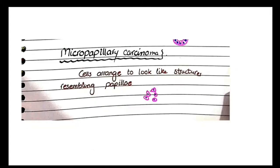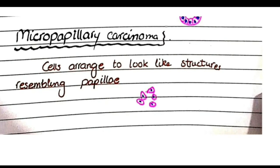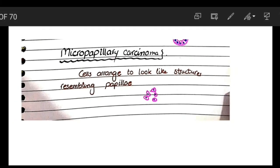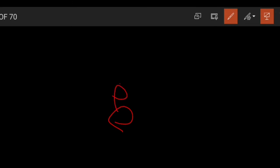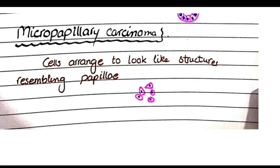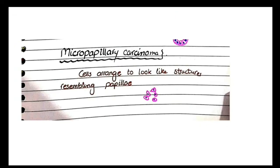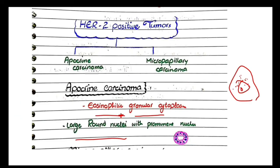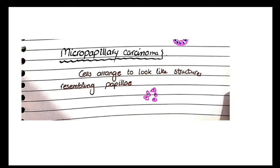Another type of HER2 positive tumor is micropapillary carcinoma. In micropapillary carcinoma, cells are arranged to look like structures resembling papilla, but unlike papillary carcinoma, there are no fibrovascular cores lined by tumor cells. Instead the tumor cells try to arrange in an orientation that appears like a finger. This is micropapillary — cells arranged to look like structures resembling papilla.